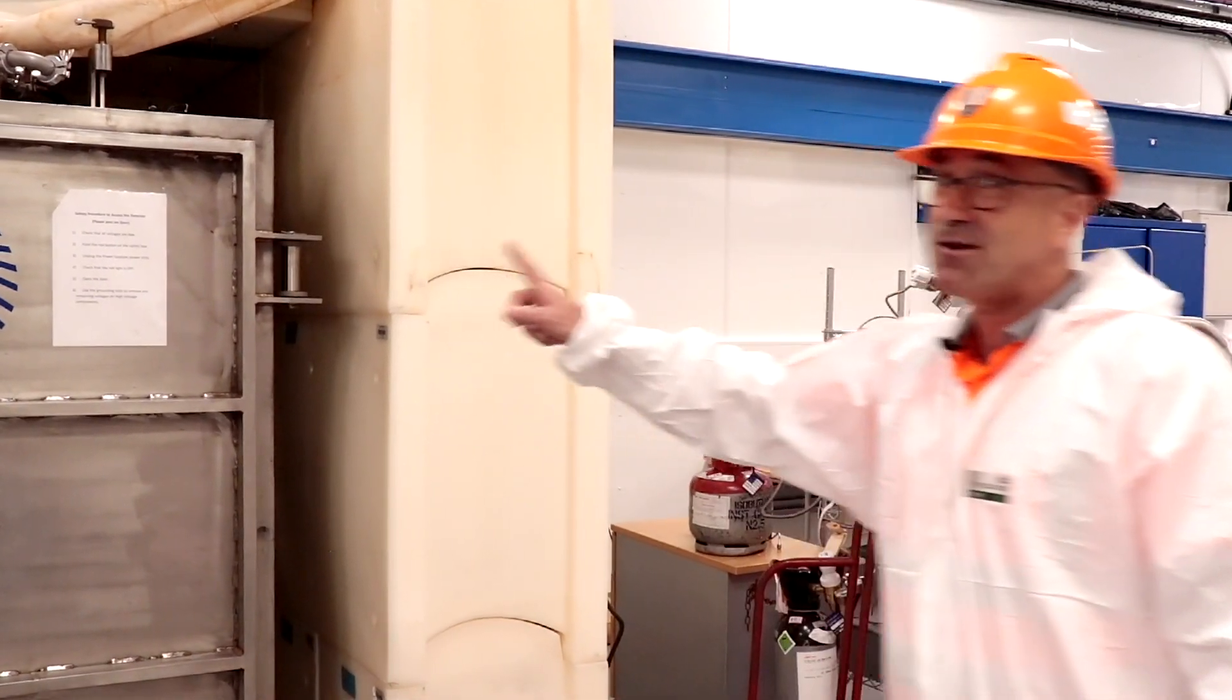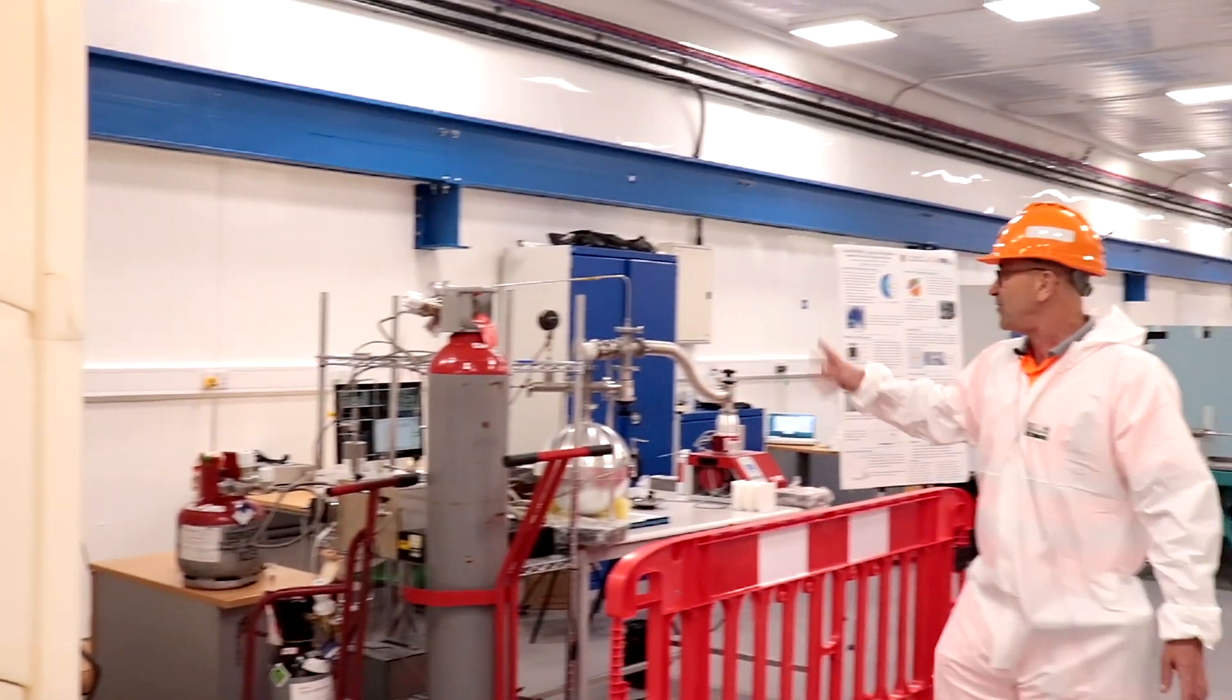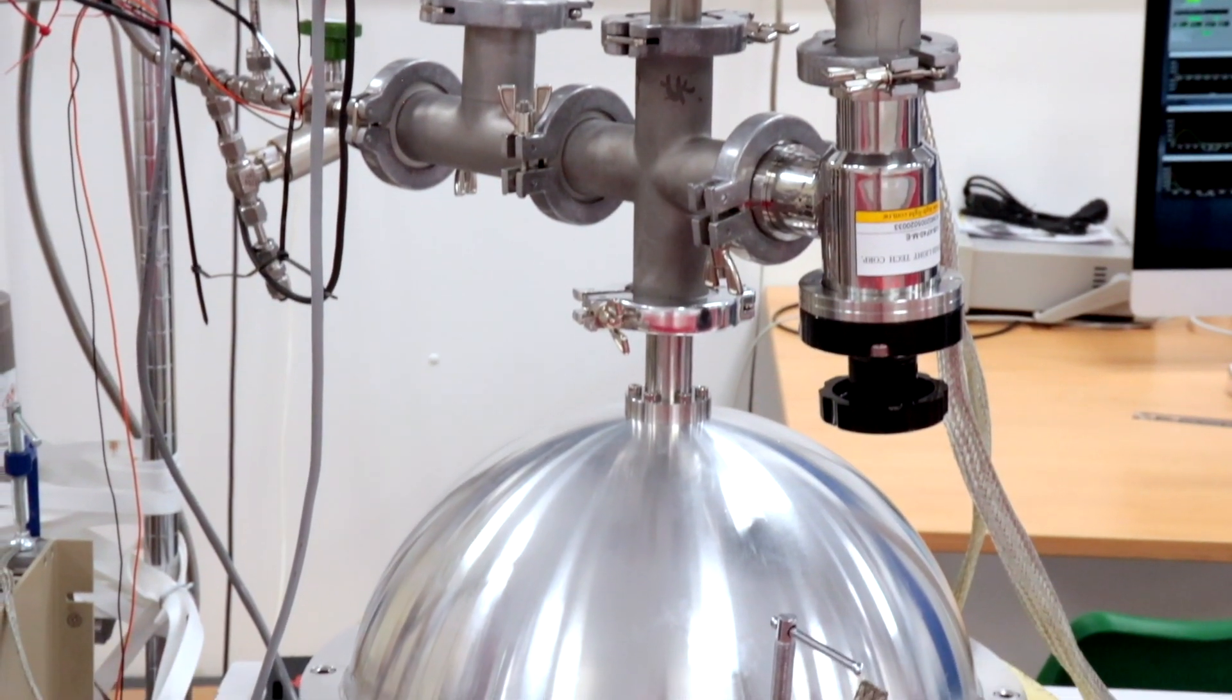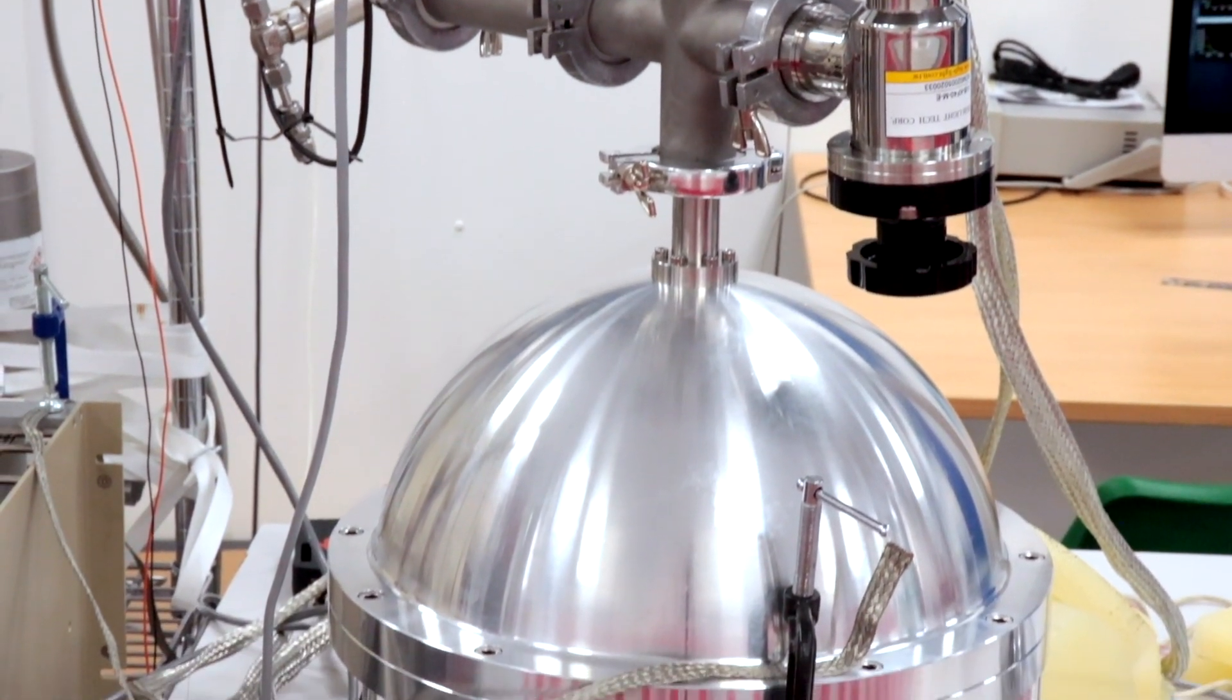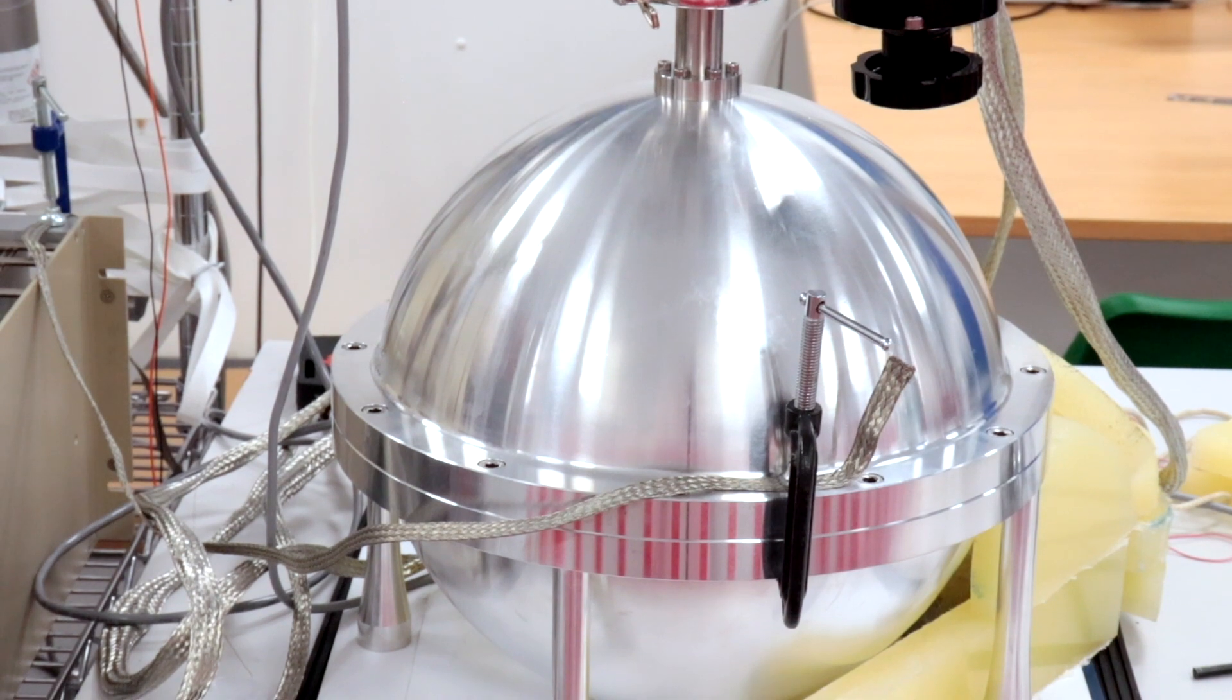This is the Drift dark matter detector and over here we have another one of our detectors underground and it's called NEWS-G. It's a small one but it's a very important one. It's trying to detect dark matter in a different way than many of the other dark matter detectors in the world.